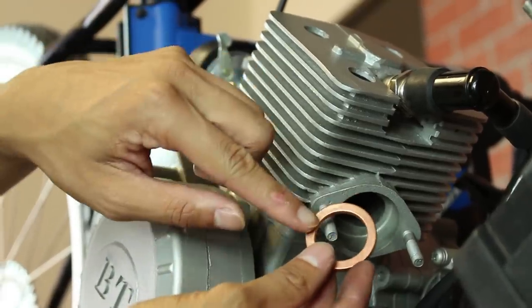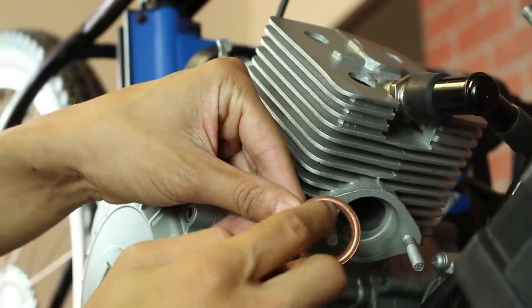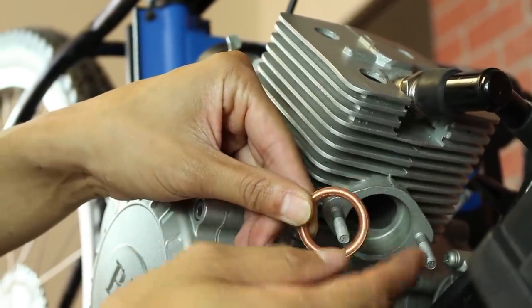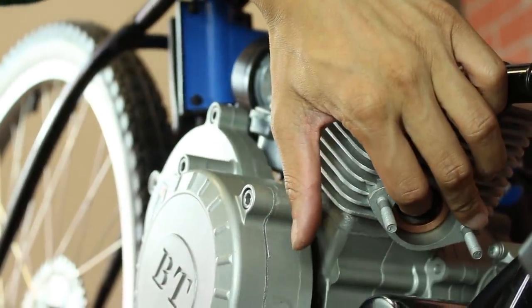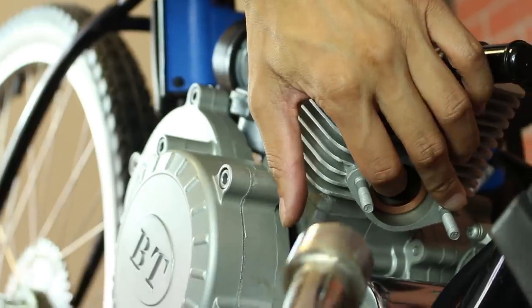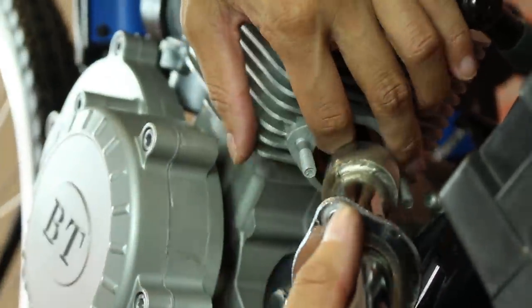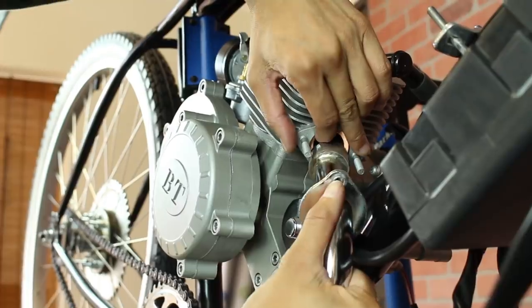Moving on to the exhaust pipe, let's put the brass gasket with the rounded end facing inside. Go ahead and insert your exhaust into the engine block and secure it in place.